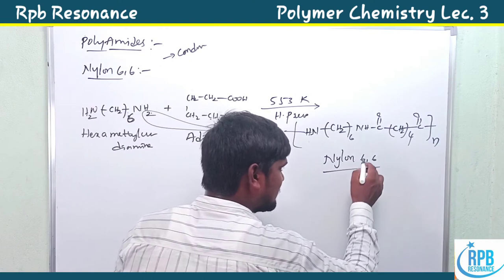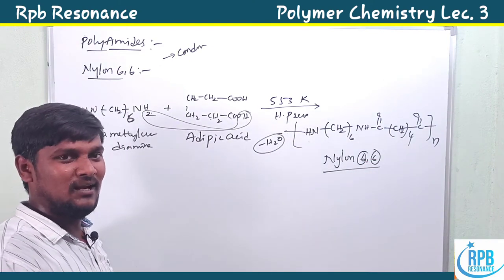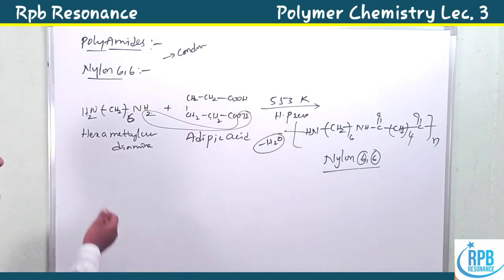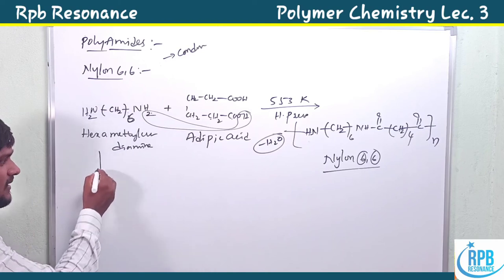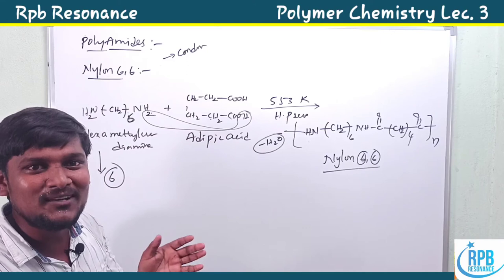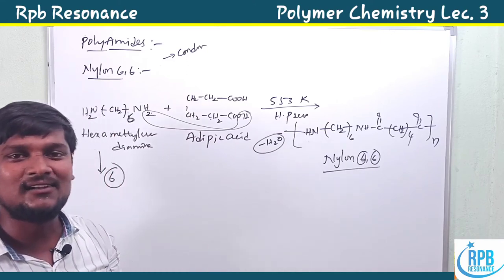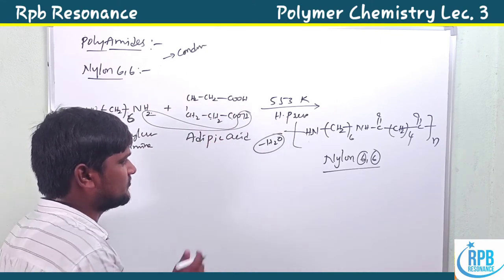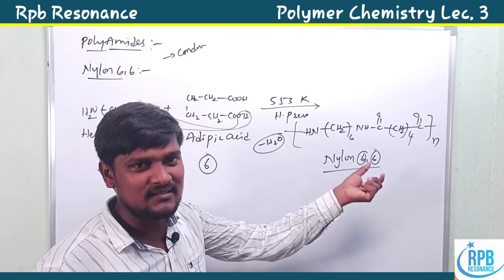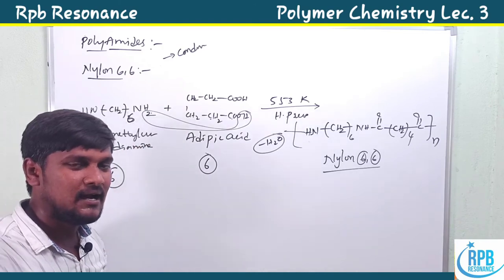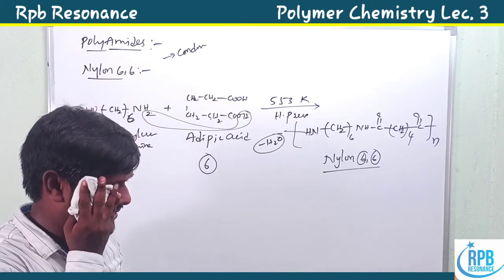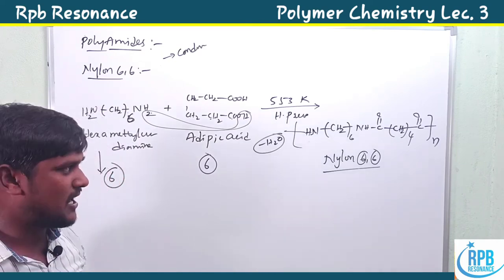In Nylon 6,6, the name tells you the monomeric units: hexamethylene diamine has six carbons, and adipic acid also has six carbon atoms (including the carboxylic acid carbons). So both monomeric units have six carbons each — that is the Nylon 6,6 terminology.